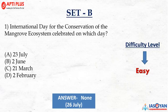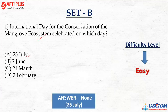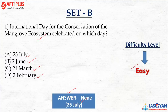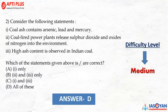Starting with question number one, we are discussing Set B. The first question: International Day for the Conservation of Mangrove Ecosystem is celebrated on which particular day? The options provided were 23rd July, 2nd June, 21st March, and 2nd February. The correct answer is not among the options — it is 26th July. This was an easy question.